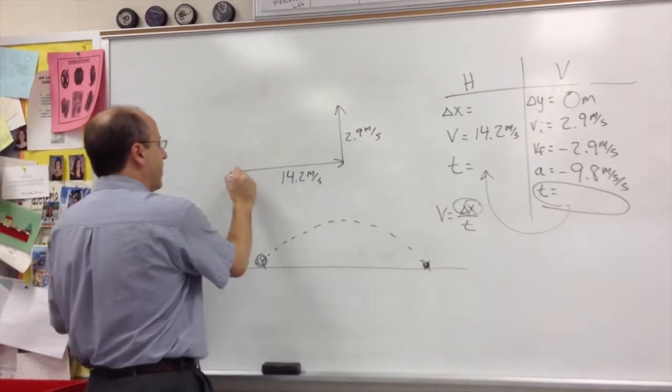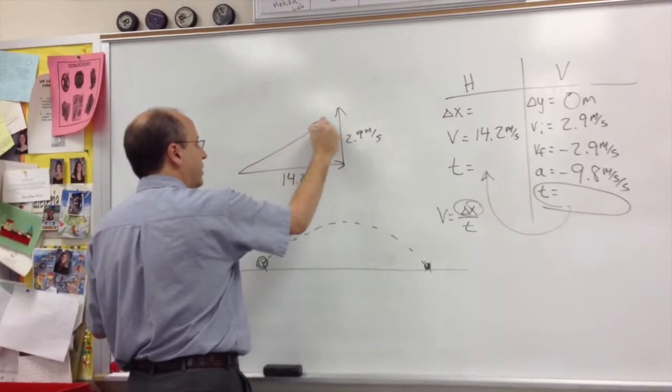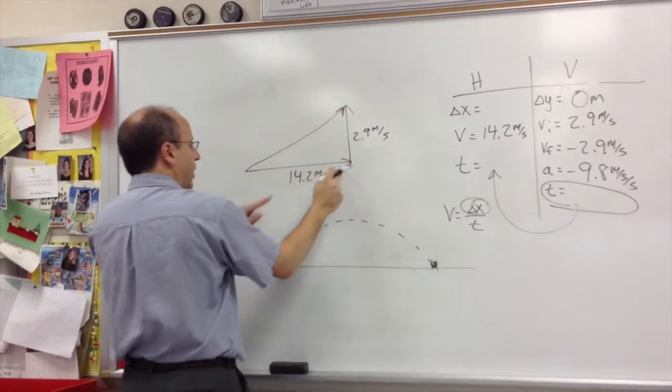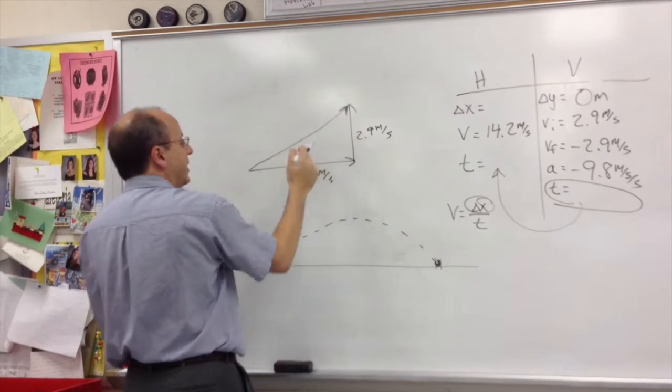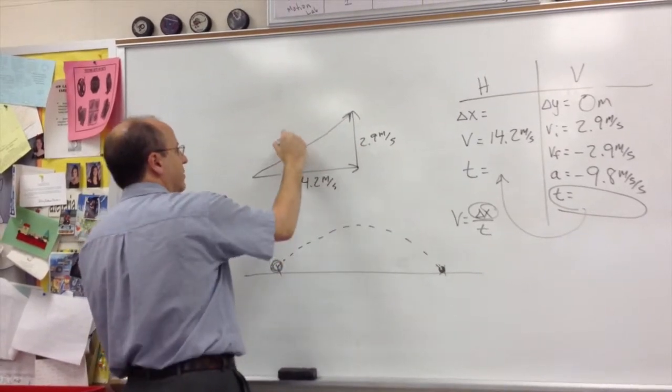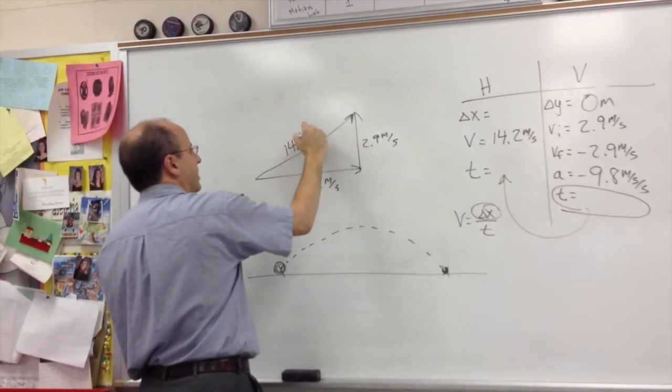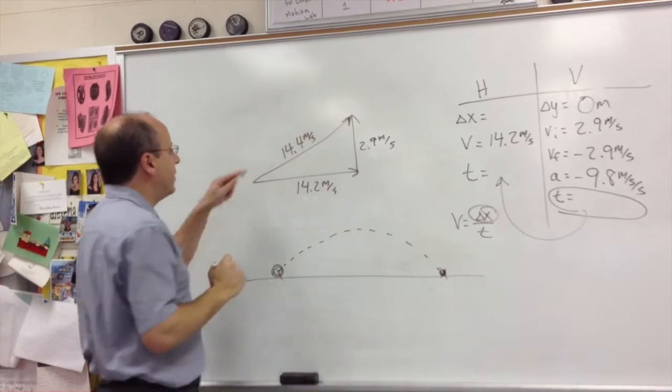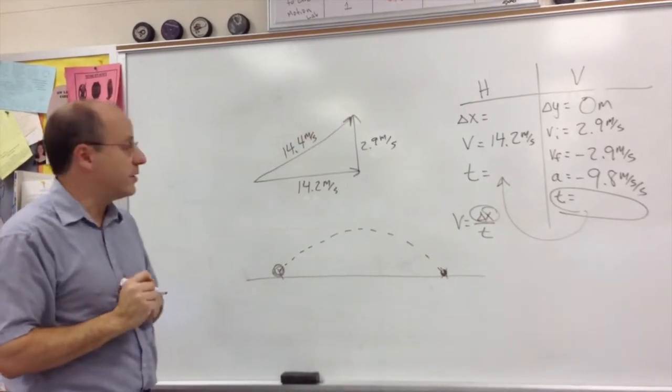You also need to find the total speed of the ball. You do that by completing your triangle. The horizontal and the vertical combine together using Pythagorean's theorem. And when you do that, you get an answer of somewhere around 14.4 meters per second.